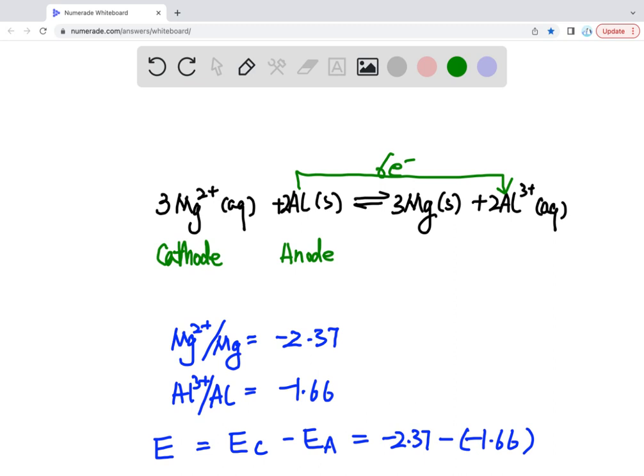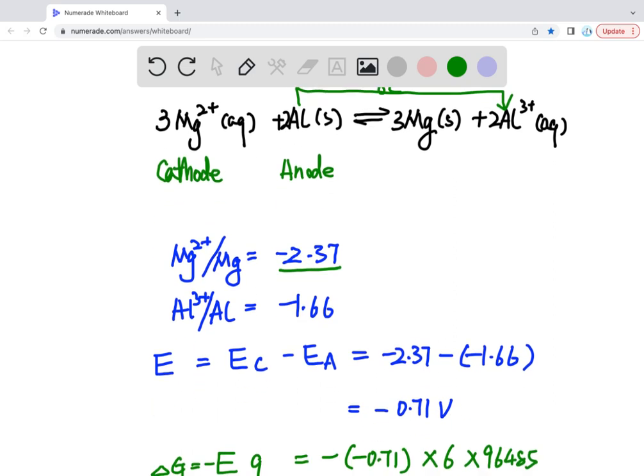So for this reaction, it's a redox reaction, so we can write down the reduction pairs. So in this reaction, it involves two reduction pairs, one is from magnesium 2+ to magnesium. If you check on the table, you can find the reduction potential is minus 2.37 volts, and another one is aluminum. Check on the table, the reduction potential of aluminum is minus 1.66.